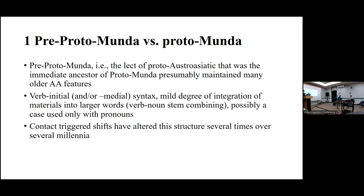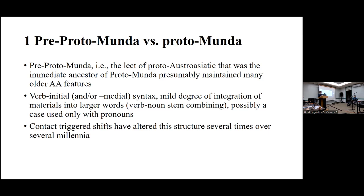Pre-proto-Munda — that is the dialect of proto-Austroasiatic that was the immediate ancestor of proto-Munda — presumably maintained many or all of the older Austroasiatic features. So this would be verb-initial syntax with a variant of verb-medial syntax, a mild degree of integration of materials into larger words, some limited verb-noun stem combining, and possibly a case particle or proclitic used only with pronouns. But contact has altered this quite dramatically over the centuries and millennia.